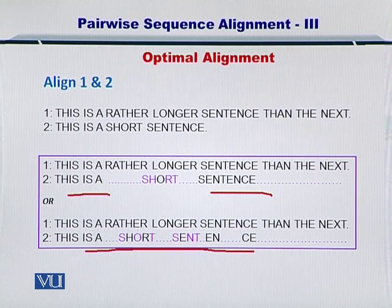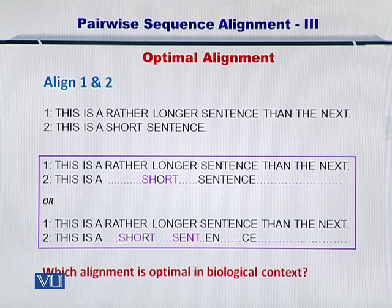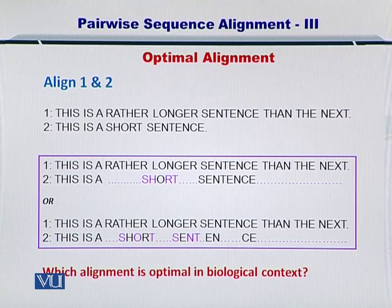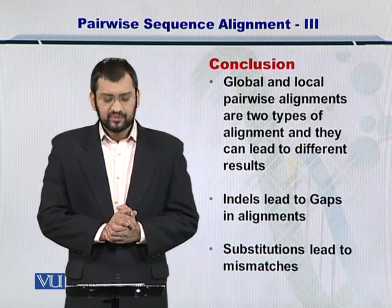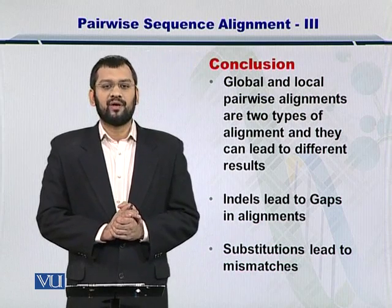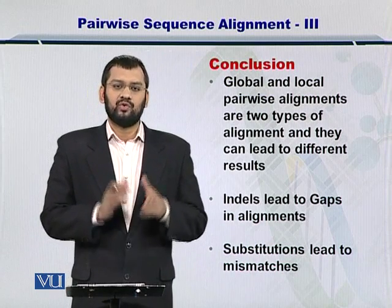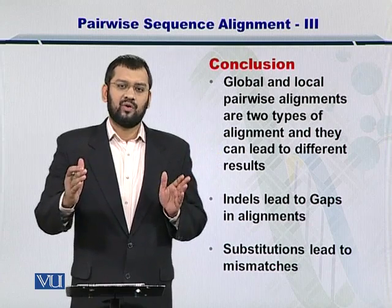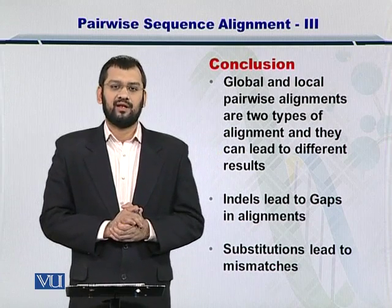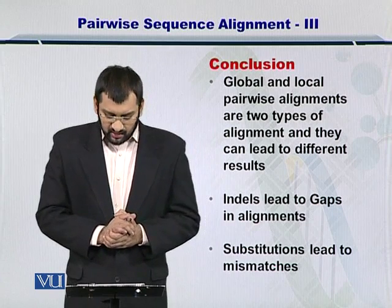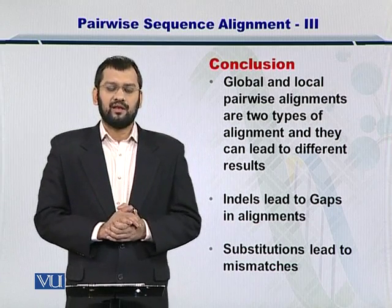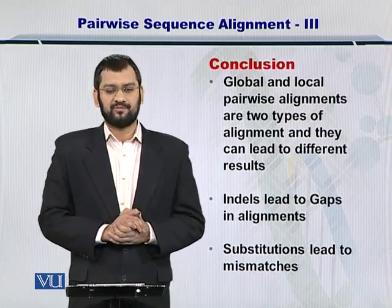We will be studying this in later modules in detail as well. Before we go on, please do not forget that the biological context is very important to decide which alignment is better. In conclusion, global and local pairwise alignments help you to compare either the entire sequences or portions within the sequences in an exact fashion. Indels lead to gaps in the alignments while substitutions may lead to mismatches.